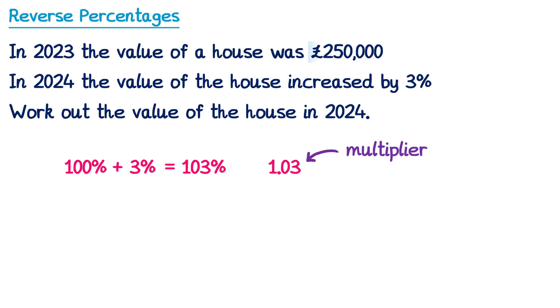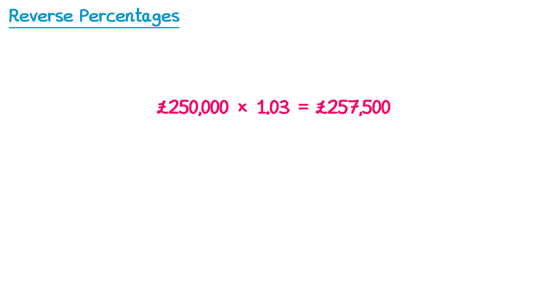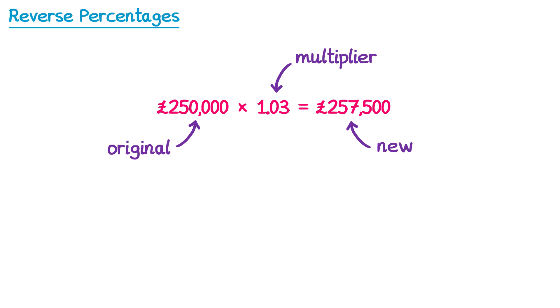We take the value of the house, £250,000, and multiply it by the multiplier, 1.03. This will increase it by 3% and give us the answer, £257,500. The £250,000 was the original value of the house in 2023. The 1.03 is the multiplier for the 3% increase, and the £257,500 is the new value of the house in 2024. In the question, we were given £250,000 and used it to work out £257,500.